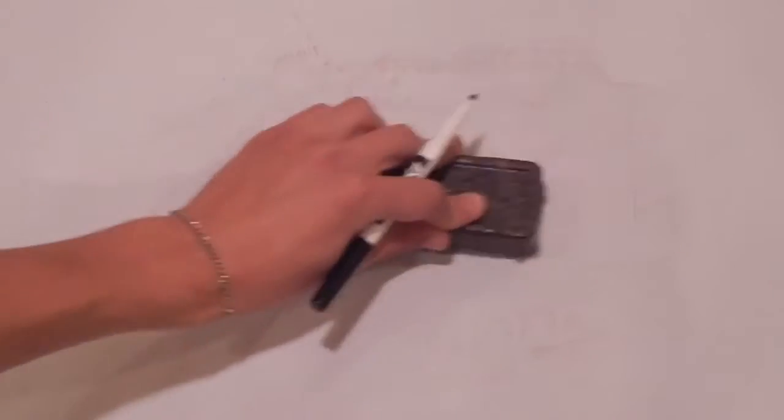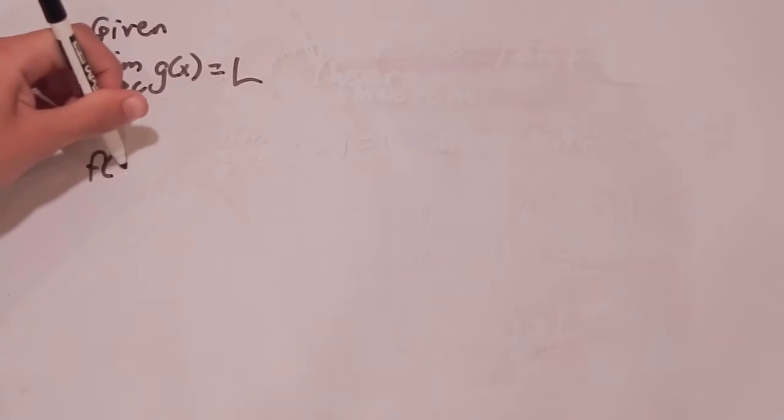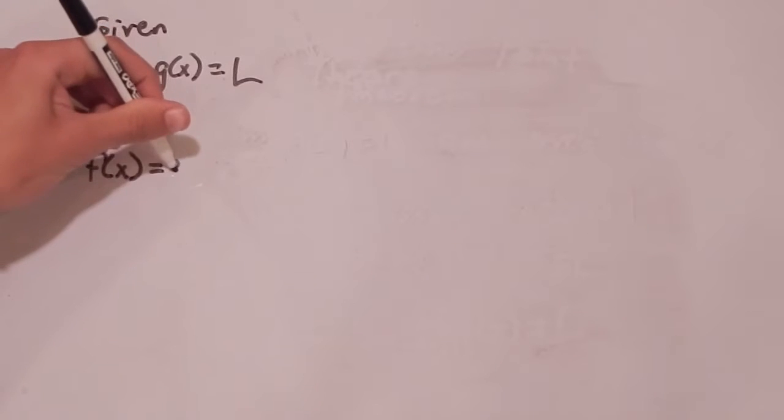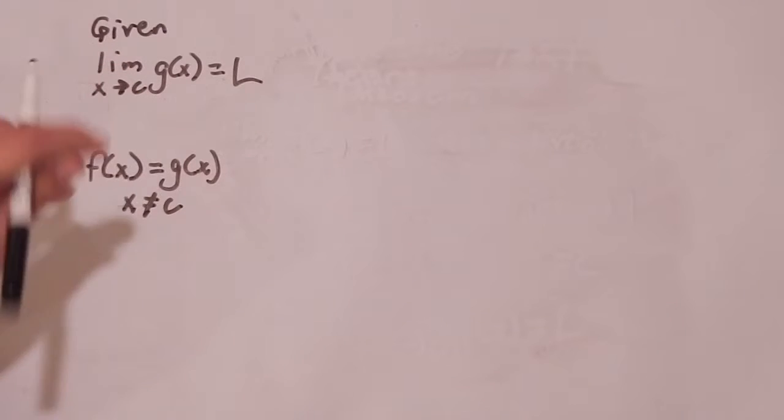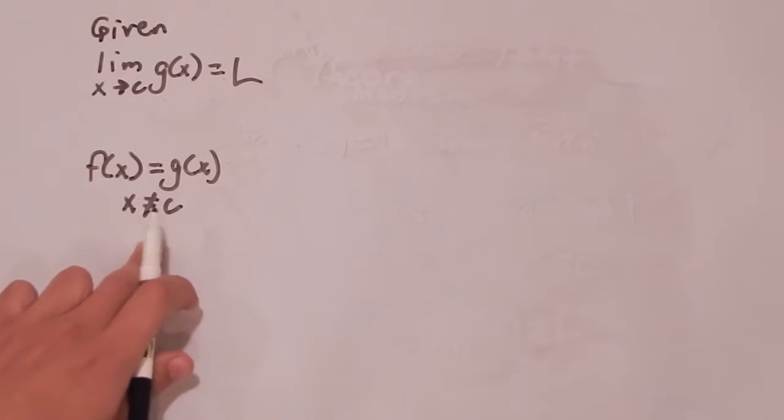So like I said earlier, the proof is actually pretty simple. And we're going to jump right in. We're going to list our given up in the top left-hand corner. So we're given that the limit as X approaches C of G of X is equal to L. We're also given that F of X is equal to G of X except at X. Well, it's only equal when X is not equal to C.